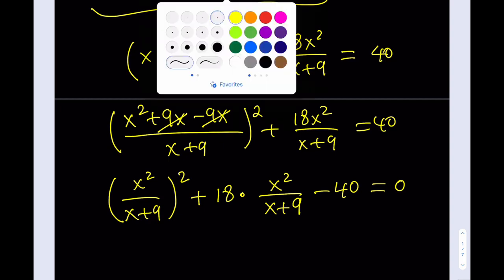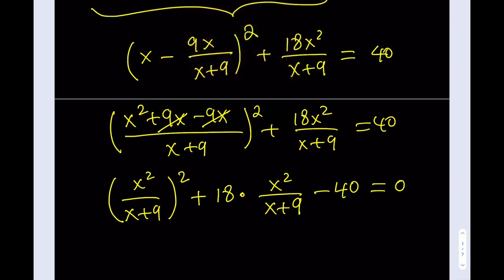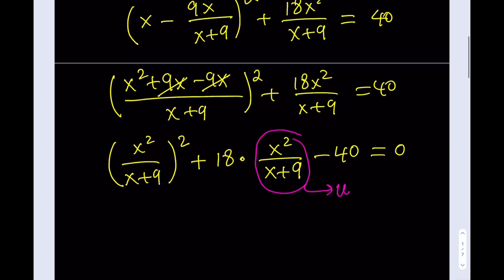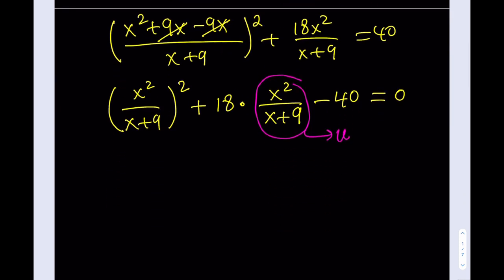So now it's going to get nicer. I want to separate the 18 here so that you can see better what I'm driving at, and then I'll bring the 40 over here. And hopefully, this is more clear now. I'm going to use substitution. I'm going to call this guy here, which is x squared over x plus 9, let's call that u. So let's go ahead and substitute that. It's going to give me u squared plus 18u minus 40. Awesome.